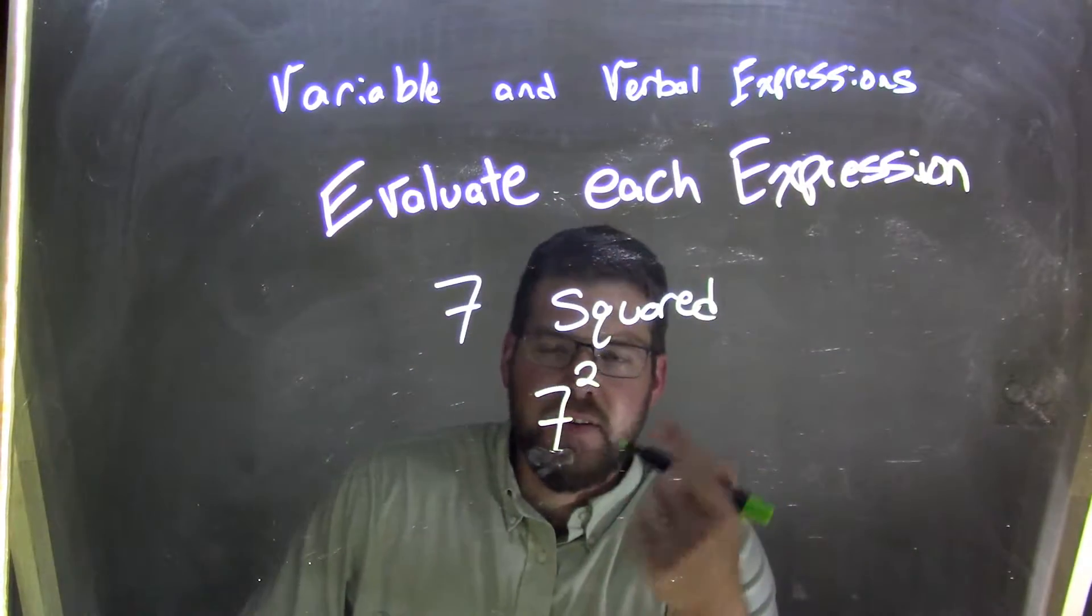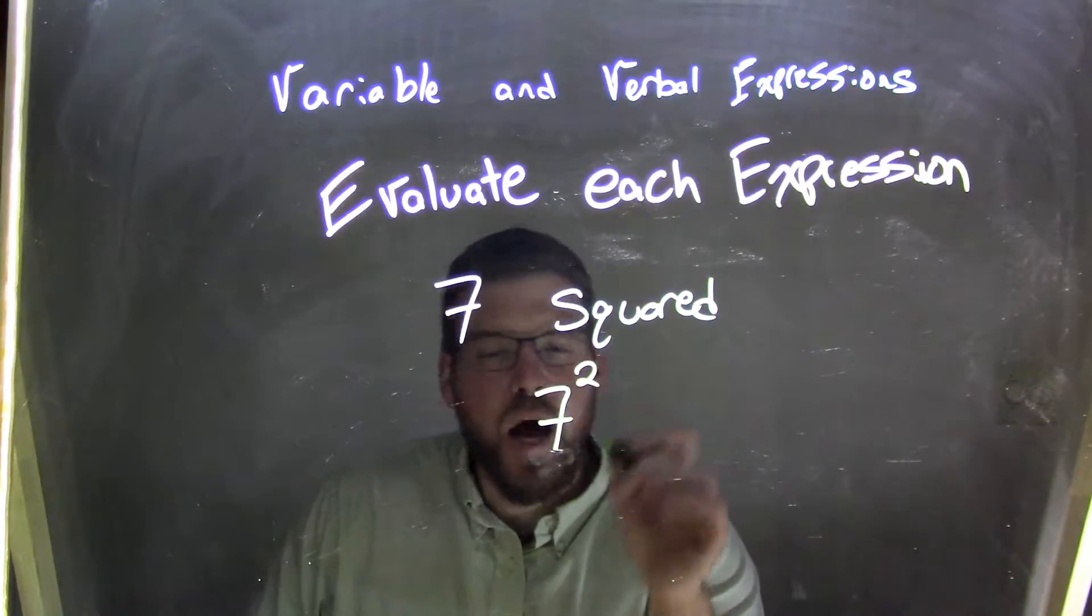7 squared, 7 to the second power, and that 7 squared is really 7 times 7.